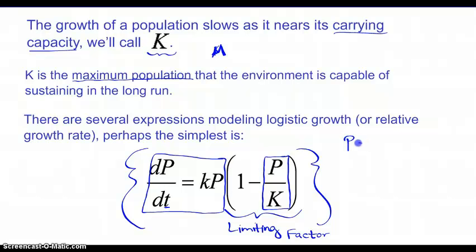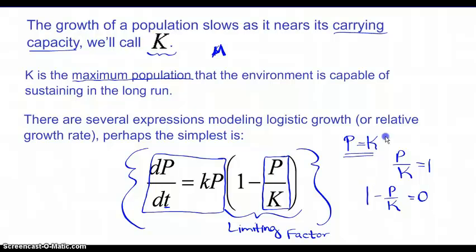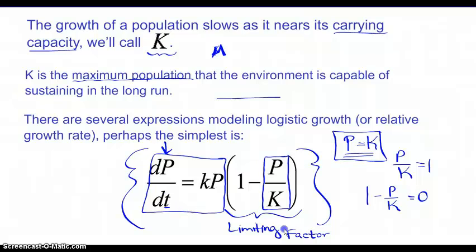When the population equals the carrying capacity, this ratio equals one, and one minus one is zero. So the limiting factor equals zero whenever the population reaches the carrying capacity, which means the rate of change of population over time is zero — the slope of the tangent line is zero, giving a horizontal tangent line. This limiting factor connects to a lot of what we know about the derivative function and its anti-derivative.